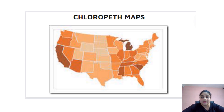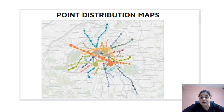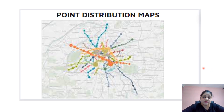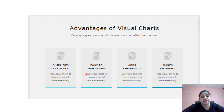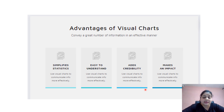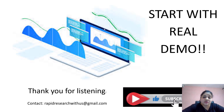Point distribution maps represent the distribution of a variable across different regions in the world or a country. We can see a thicker distribution of the variable along certain areas and less distribution along others. These are the different visualization charts used in Tableau. The benefits of visualization charts are that they simplify our statistics, are easier to understand, add credibility, and make it easier to communicate to other users with large impact. Visual charts are very important and visualization using Tableau is very easy. If you want to join me on this journey to learn Tableau, do contact me, subscribe to my channel, and thank you for listening.